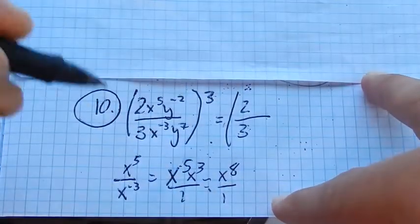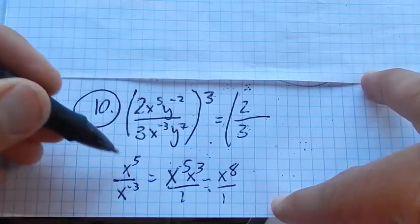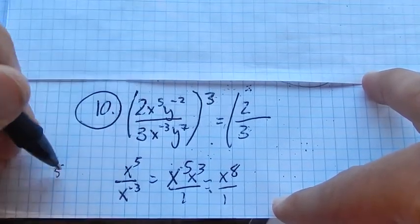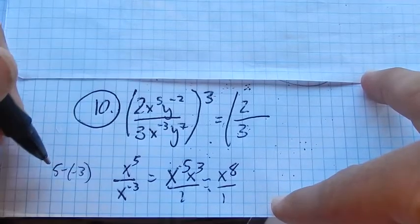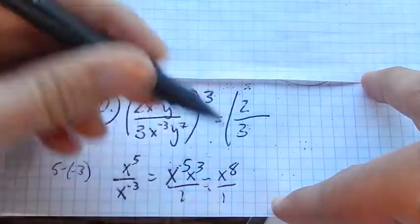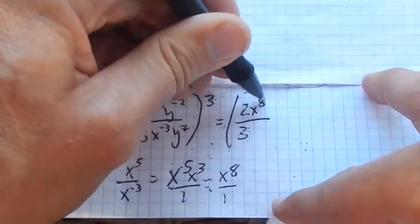Five of them plus three of them. If you're thinking about those exponent rules, remember when you have division, you're subtracting. Five minus negative three is positive eight. So I'm going to have an x to the eighth up in the numerator.